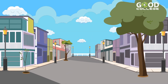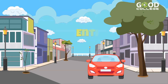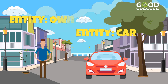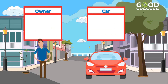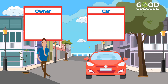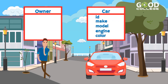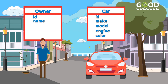To better understand, let's draw a diagram for the example of the previous class. We have two entities: Car and Owner. These entities will now be represented by a box. Car has attributes: id, make, model, engine, and color. Owner has attributes: id, name, address, phone, and birthday.